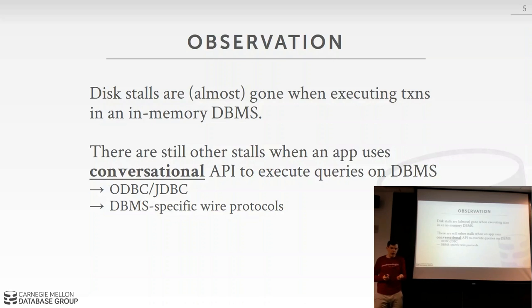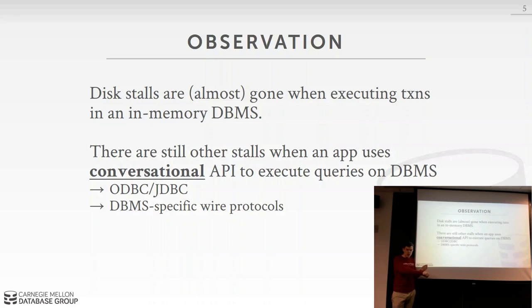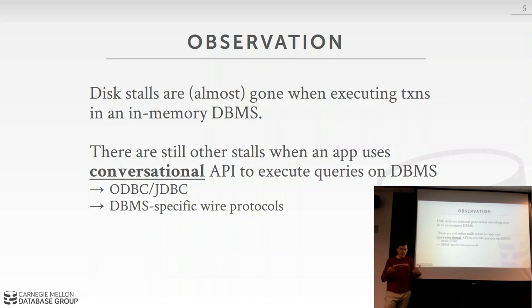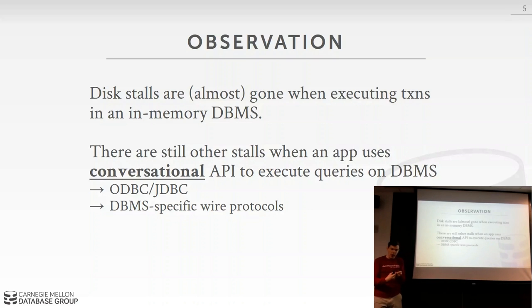The stall most relevant to our concurrency control discussion is the network. Someone posted on Piazza asking whether these papers ignore the cost of sending messages over the network — and that's true, but I'm not focusing on inter-node communication in distributed systems. I care about messages the application server sends to the database server to execute queries and transactions. Now that disk is gone and transactions are super fast, the next bottleneck is the network.